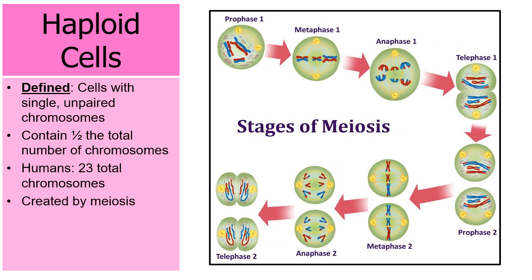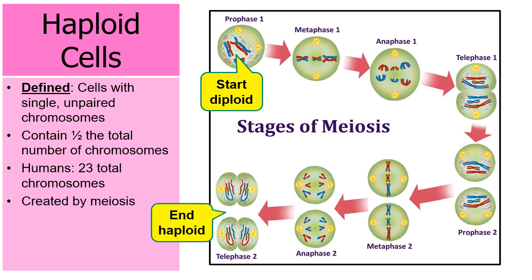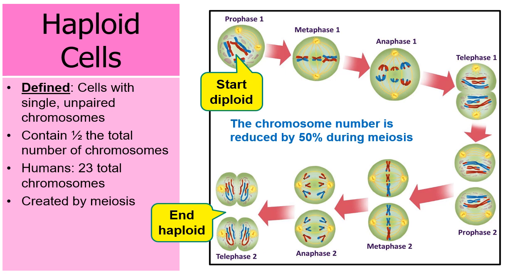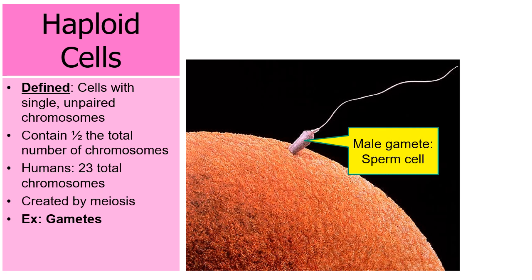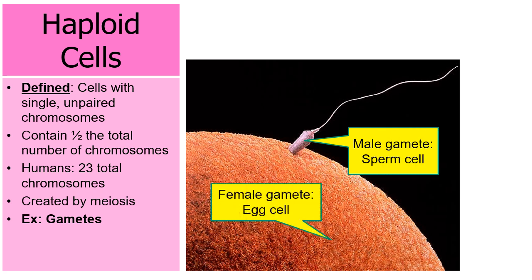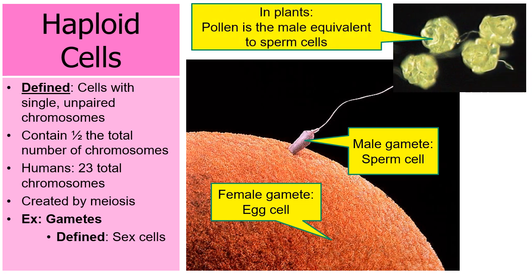Meiosis is the process that creates haploid cells. When a cell goes through meiosis, it starts diploid but becomes haploid — the chromosome number is reduced by 50%. Haploid cells are the gametes. The male gamete is sperm cells and the female gamete is egg cells. In plants, pollen is the male equivalent of sperm cells. So pollen, sperm, and egg cells are all examples of gametes.